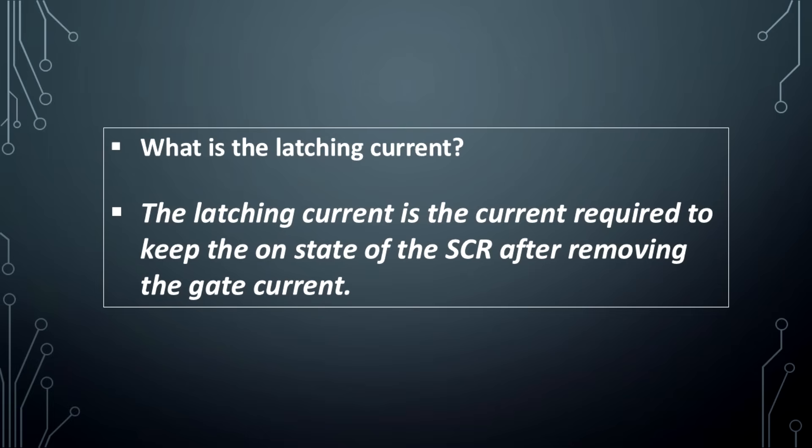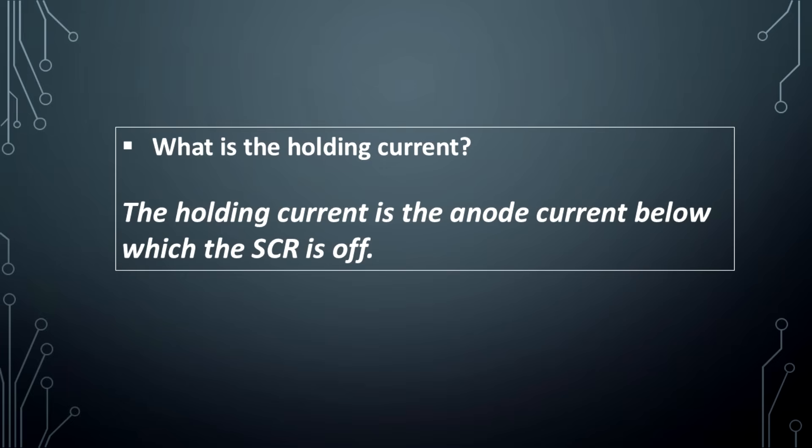What is the latching current? The latching current is the current required to keep the on-state of the SCR after removing the gate current. What is the holding current? The holding current is the anode current below which the SCR turns off.